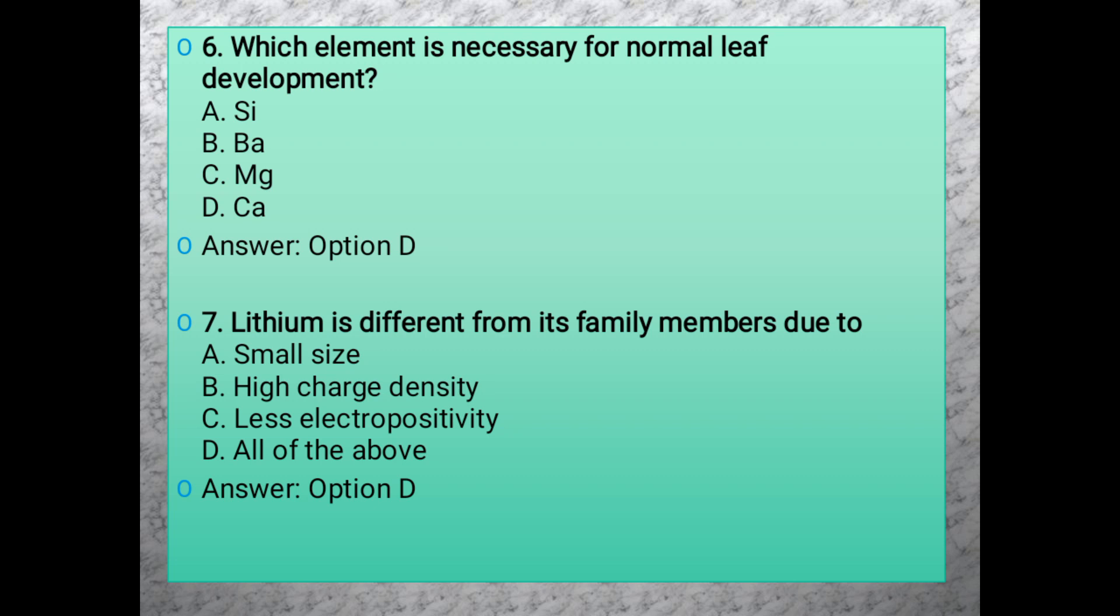Question 7: Lithium is different from its family members due to what? The answer is option D, all of the above. Lithium is different because of its small size, high charge density, and less electropositivity. When size is small and charge is high, it's like having many people in a small room causing suffocation. Small size leads to high charge density and lower electropositivity.